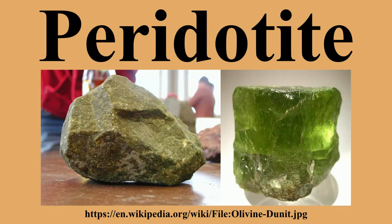Minor minerals and mineral groups in peridotite include plagioclase, spinel, garnet, amphibole, and phlogopite. In peridotite, plagioclase is stable at relatively low pressures, aluminous spinel at higher pressures, and garnet at yet higher pressures. Pyroxenites are related ultramafic rocks which are composed largely of orthopyroxene and/or clinopyroxene.